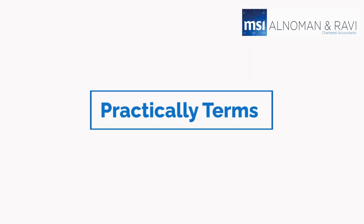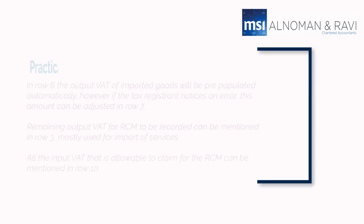Now let's get into the practical implementation of RCM when filing for the VAT returns. In row 6, the output VAT of imported goods will be pre-populated automatically. However, if the tax registrant notices an error, this amount can be adjusted in row 7. The remaining output VAT for RCM to be recorded can be mentioned in row 3, mostly used for import of services.